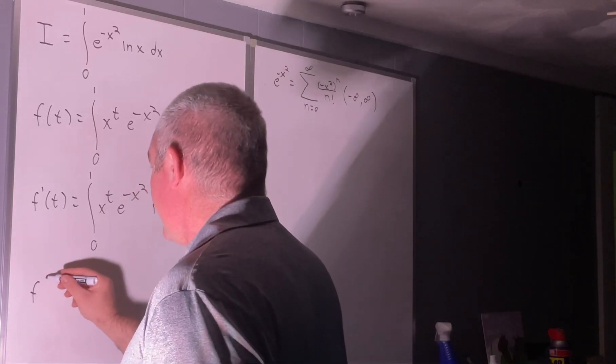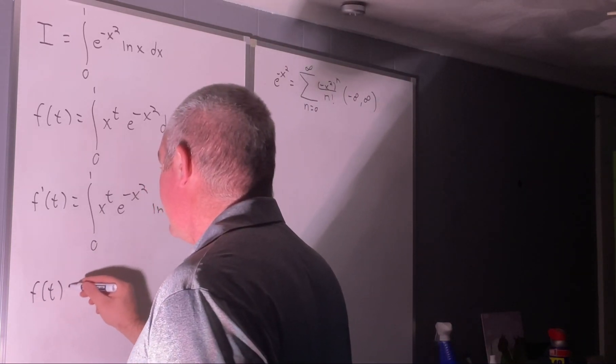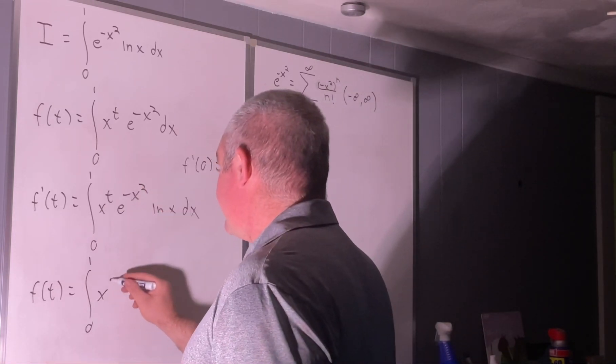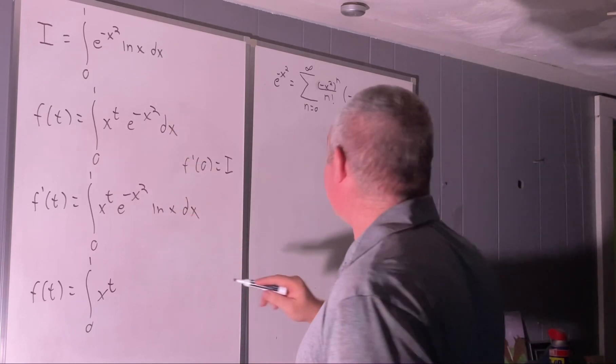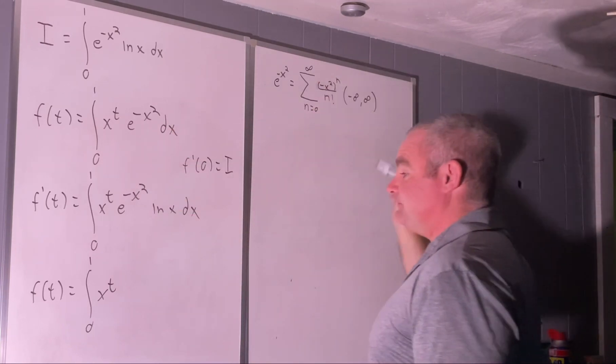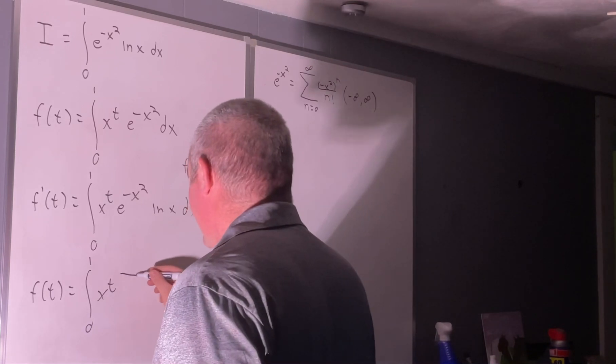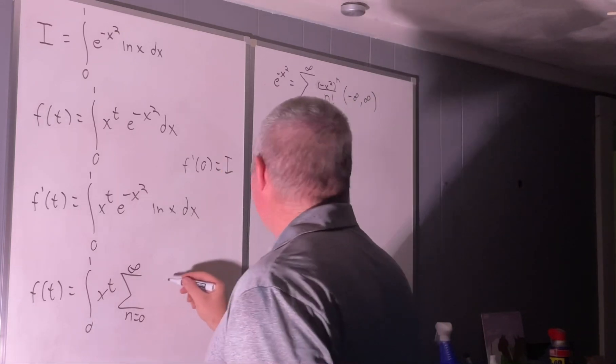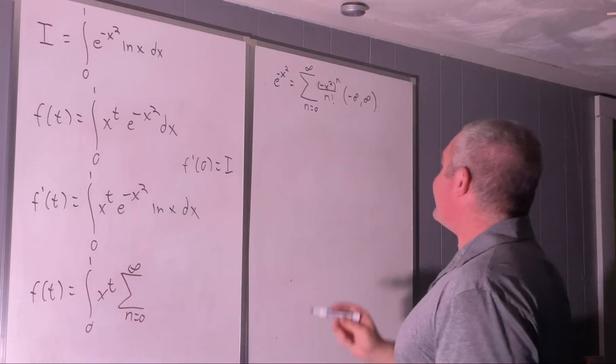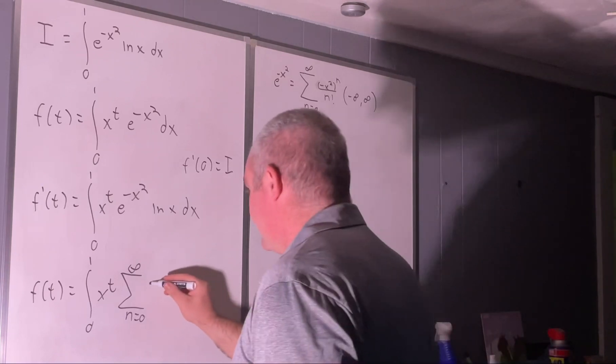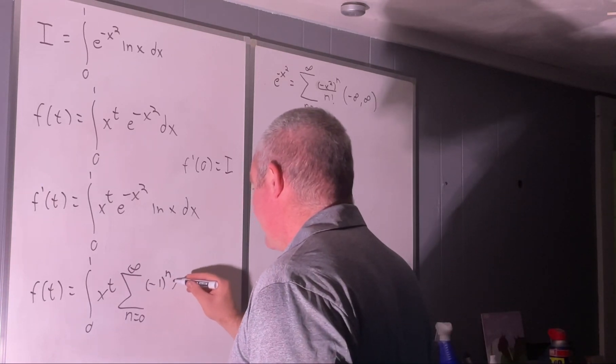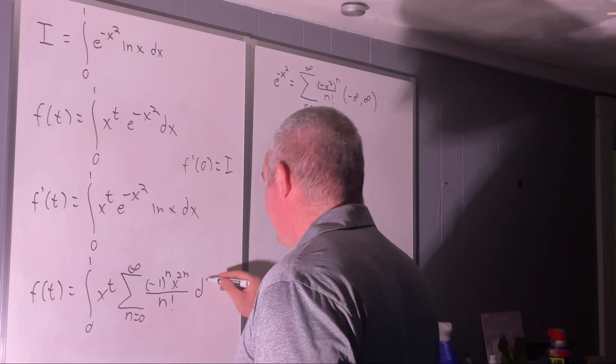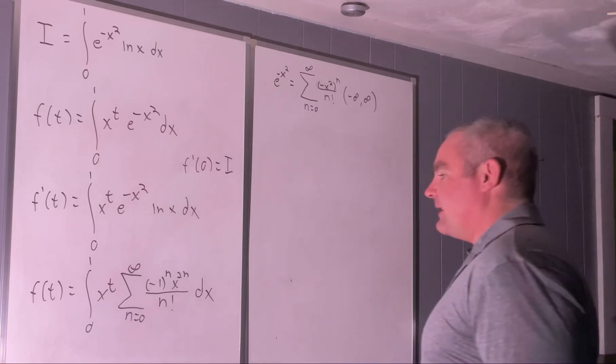All right, so that's going to give us f of t is equal to the integral from 0 to 1 of x to the t times e to the negative x squared, which we'll be writing this way. Okay, so that is times the sum from n equals 0 to infinity of, well, we'll rewrite this as negative 1 to the n times x to the 2n. Negative 1 to the n times x to the 2n. And then we'll still have over n factorial. And all of that is integrated with respect to x.